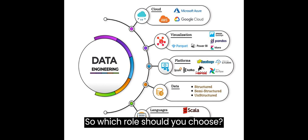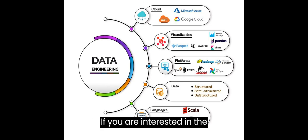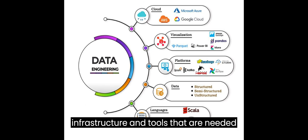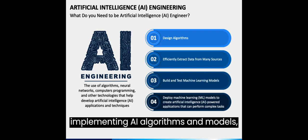So, which role should you choose? It depends on your interests and skills. If you are interested in the infrastructure and tools that are needed to power AI solutions, then data science engineering may be a good fit for you. If you are interested in developing and implementing AI algorithms and models, then AI engineering may be a better fit.